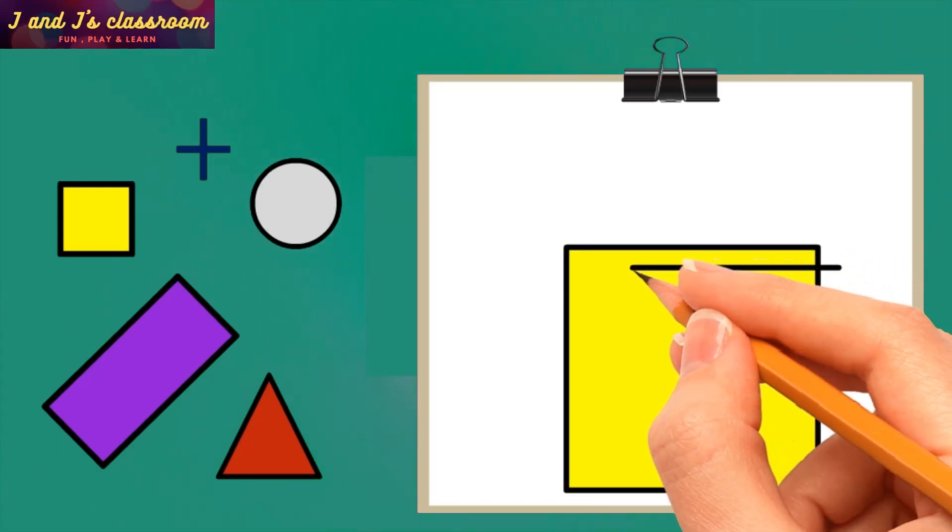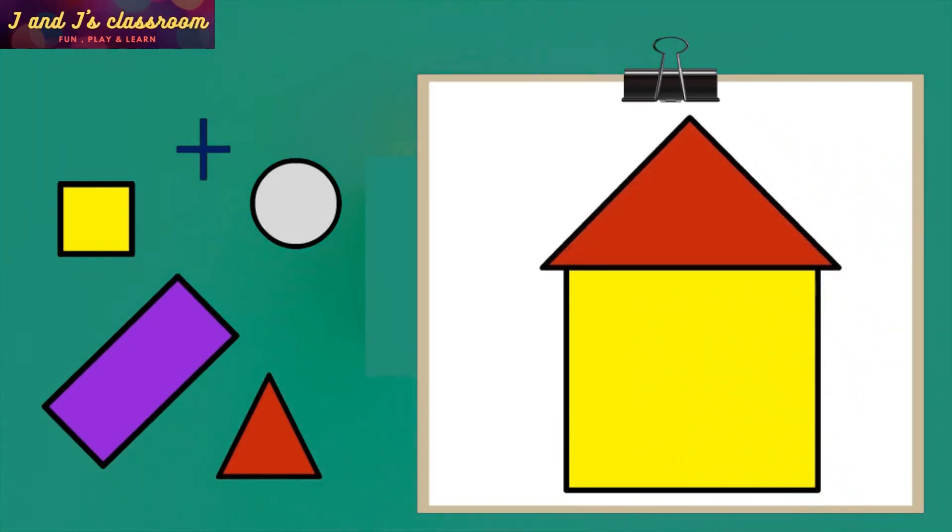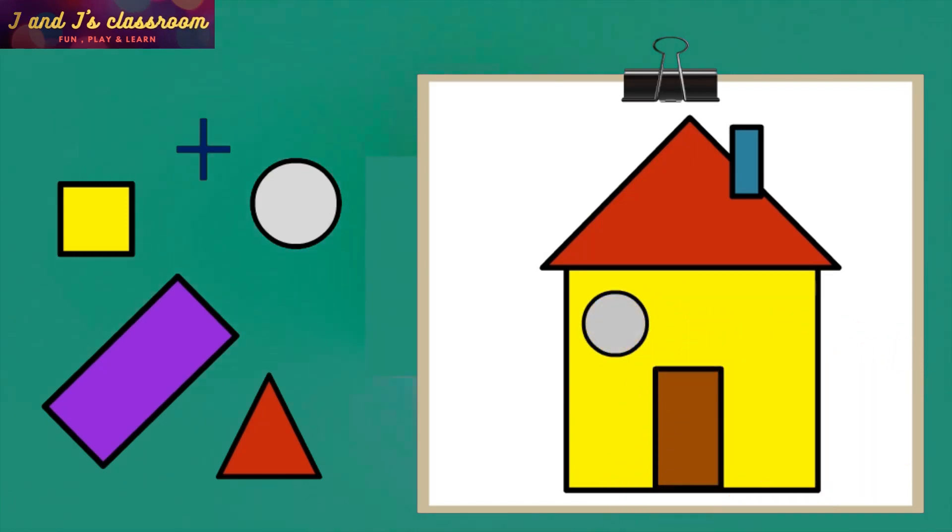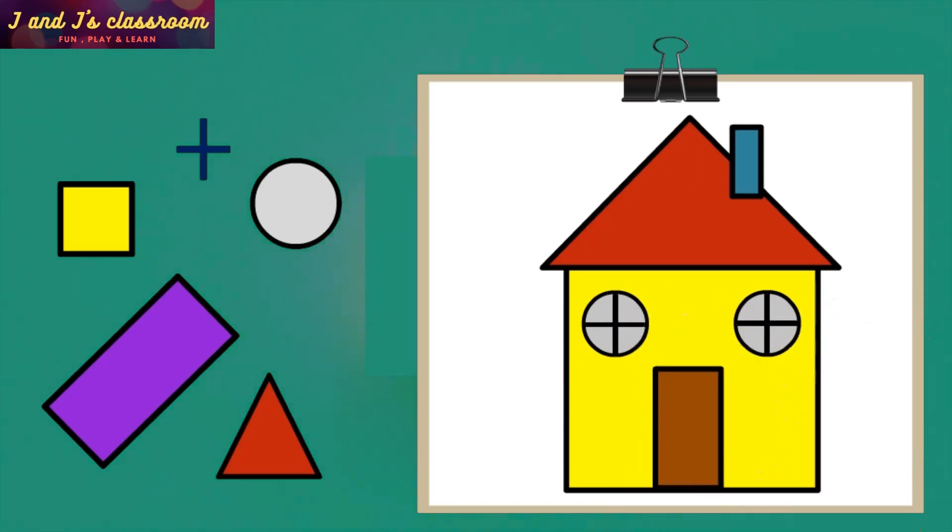Next, draw a triangle for the roof. Then draw a small rectangle for the chimney and a big rectangle for the door. Then draw two circles and draw a plus inside of the circles. Wow! Now the house windows are also ready.